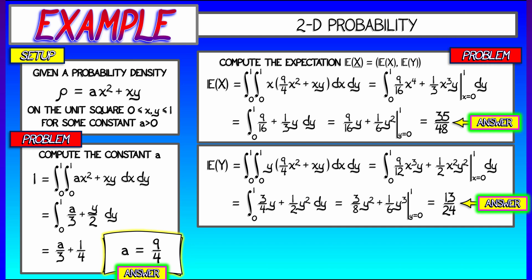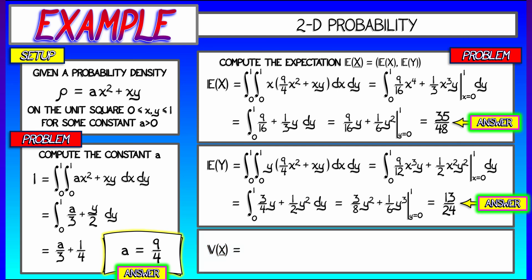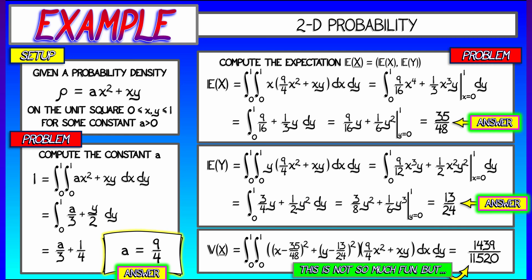Now comes the killer. If you want to compute the variance in 2D, you need to integrate the squared distance to the expectation. That means taking the quantity X minus E of X — that is X minus 35 forty-eighths — squared, plus Y minus E of Y — that is Y minus 13 twenty-fourths — squared, multiplying by rho (9 fourths X squared plus XY), and integrating with respect to X and Y from 0 to 1. That's a lot of algebra. The result is 1,439 divided by 11,520. You could check that — it's not so much fun, but it is the kind of thing one can automate.